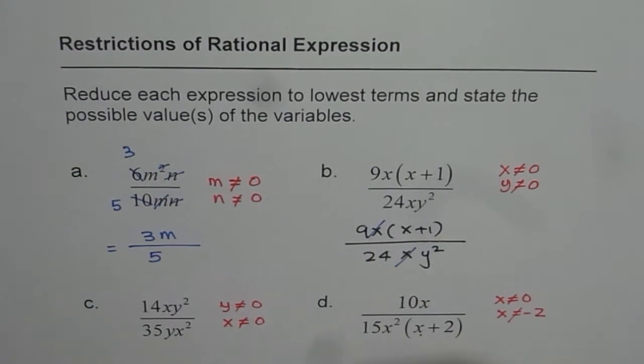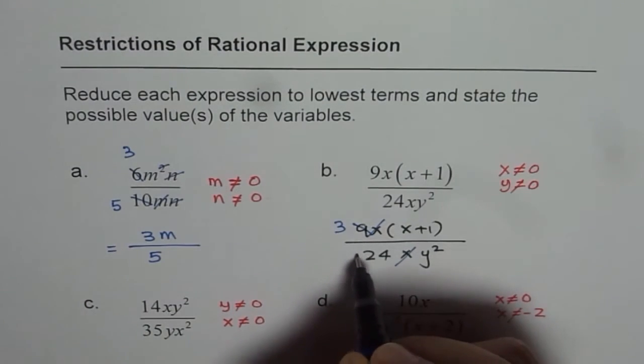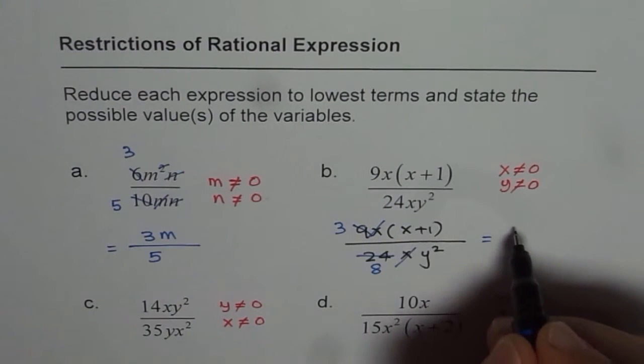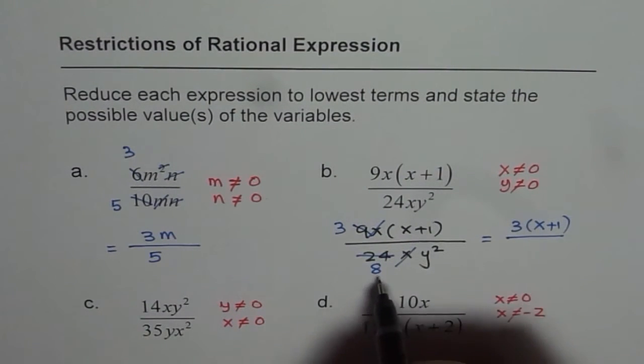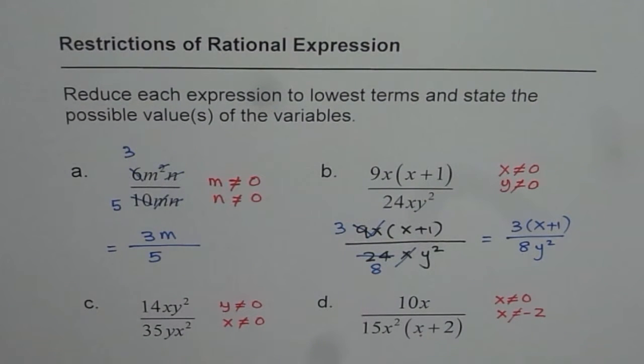9 and 24, both can be divided by 3. So we get 3 times 3 and 3 times 8. With that, we get the lowest term which is 3 times X plus 1 divided by 8Y square.